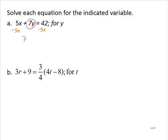So I'll subtract 5x from both sides. So that gives us then 7y is equal to, now 42 and 5x are not like terms. So we can write 42 minus 5x.